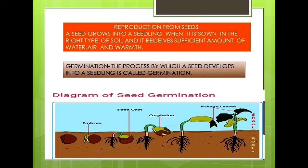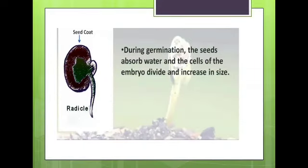A diagram of seed germination is shown in your slide. You can see the embryo — the tiny or baby plant — the seed coat, the protective layer, the cotyledon, the food supplier, and the foliage leaves, which are the site of photosynthesis. The development of a seed into a seedling is not a single-step process. Before growing into a fully grown plant, a seed has to go through a number of stages.